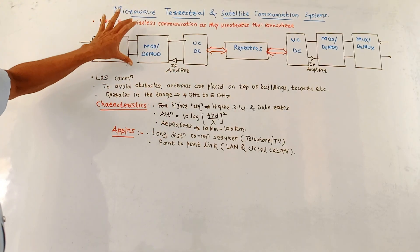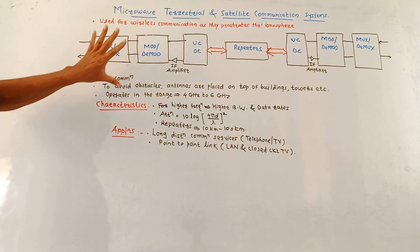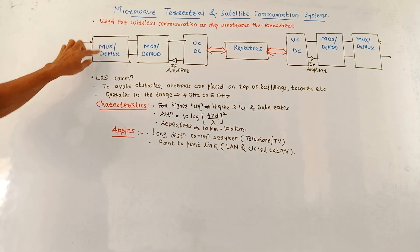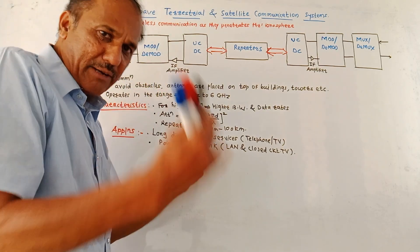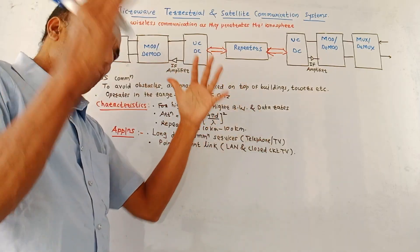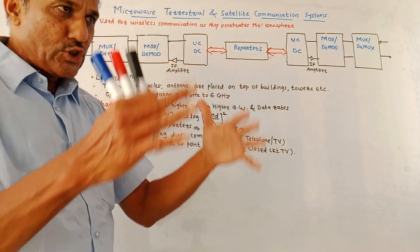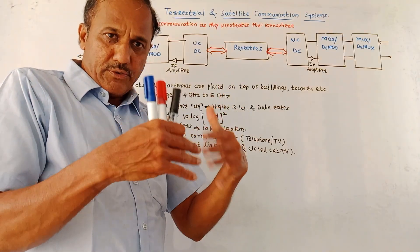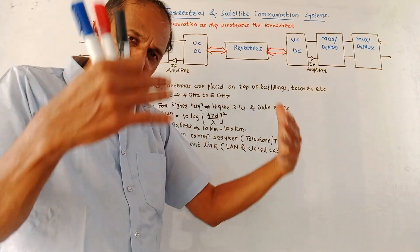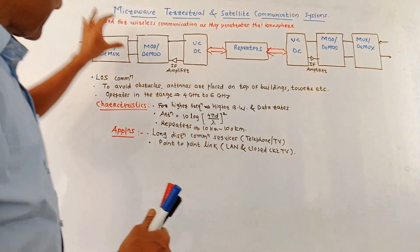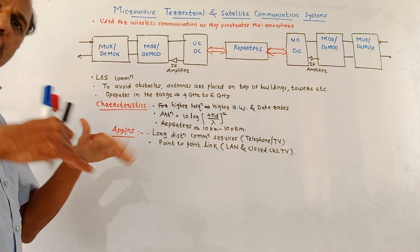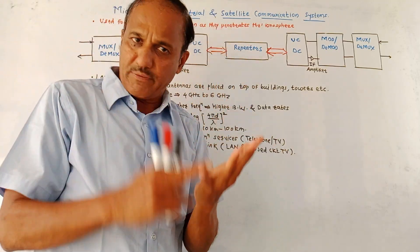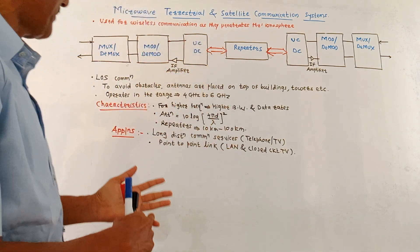This diagram shows the block schematic of a terrestrial communication system. We are using mux and demux because this is multiplexing and demultiplexing. The data to be transmitted and received is a combination of different things, so multiplexers and demultiplexers are used. Usual techniques are time division multiplexing and frequency division multiplexing.